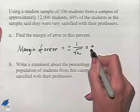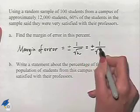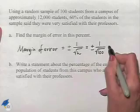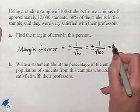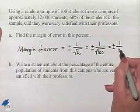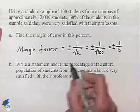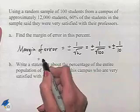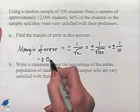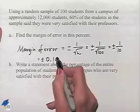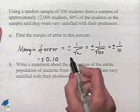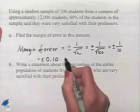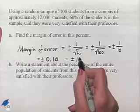So in this problem, we'll have plus or minus 1 divided by the square root of 100. That's going to equal plus or minus 1 divided by 10, which is plus or minus .10 written in decimal format, and written as a percentage, that's plus or minus 10%.